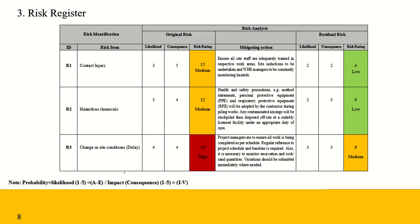Mitigation actions are pre-planned and coordinated actions designed to reduce or minimize the short- and long-term impacts. For each risk item, an appropriate mitigation action is provided. As a case in point, for contact injury, training stops and site induction are proposed. These mitigation actions are designed to reduce the risk rating of the project. By implementing the mitigation plan, the risk rating for contact injuries was reduced from 15 to 4.